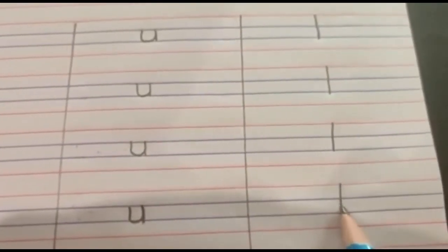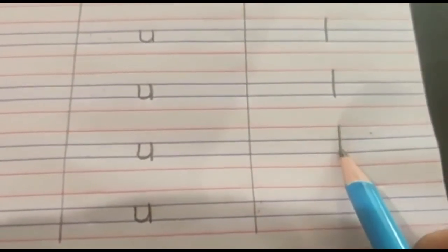Now moving to letter L. So to write small L, start from the red line, go down to the second blue line, L. L says L. L says L. Children, be neat when you are writing and try and not use the eraser. L says L.